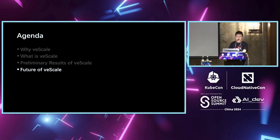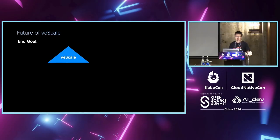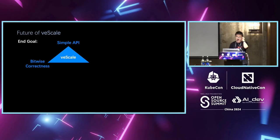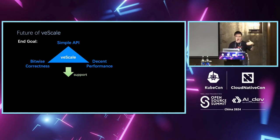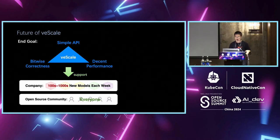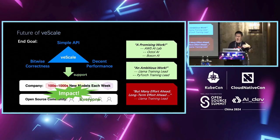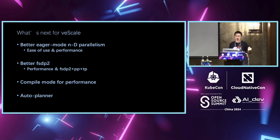In the final part, I'll show some future directions for V-Scale. The end goals are three things: first, making our APIs as simple as possible so users can easily use them for development and maintenance; second, guaranteeing bitwise correctness; and third, achieving decent performance. With all three, we can provide solid support not just for TikTok's business needs but also for the open source community. Here are some comments from big contributors in our community, and here are specific items on our roadmap.